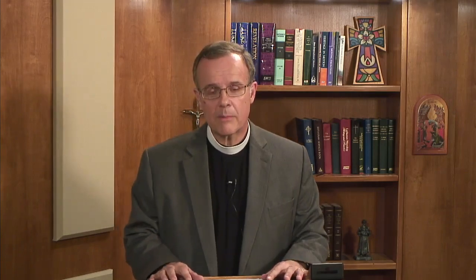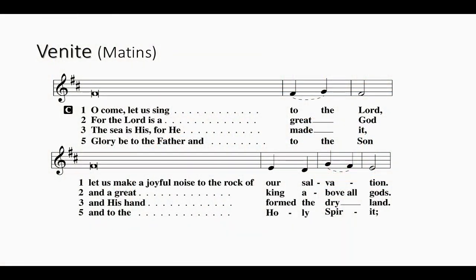For the first example, let's look at the Venite in the service of Matins. What you have here is actually a psalm tone, although many people don't realize it. As long as they've been singing the Venite, they've actually been singing a psalm to a psalm tone. In fact, it's a double tone and it's a little more complex than the psalm tones that we have for the psalms that we sing.